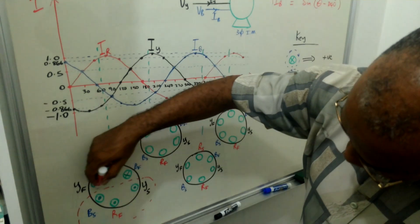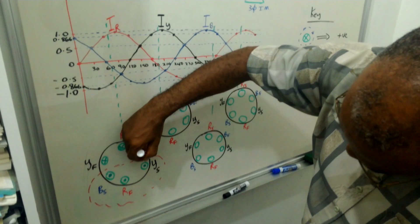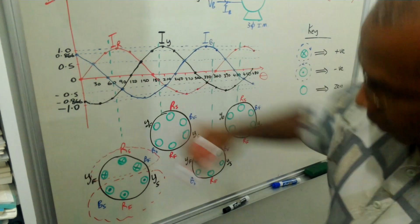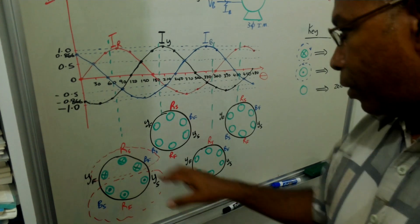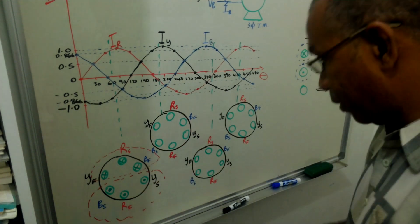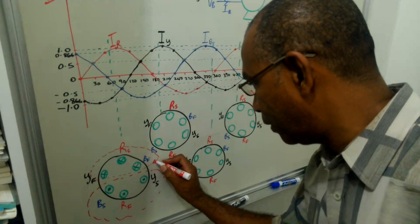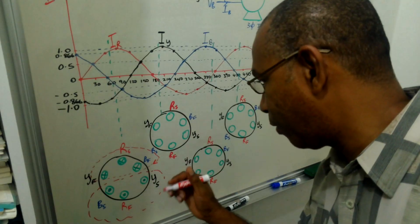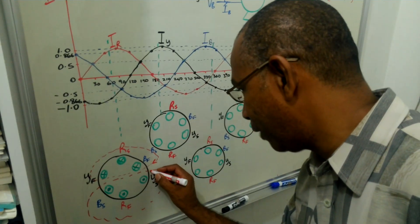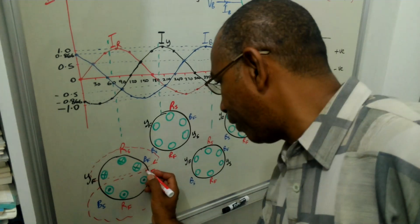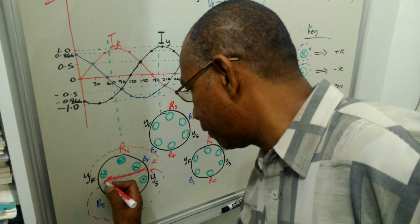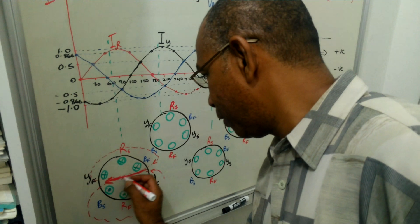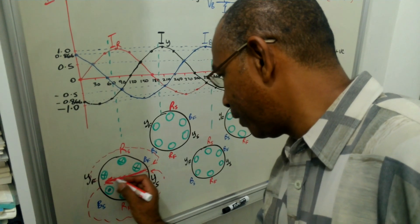Similarly, these are going in the same direction, so we can also combine these. When the current is going away, the direction of the magnetic field is in the clockwise direction. When it's coming at you, it's in the anti-clockwise direction, which means it is going that way. So the net direction of the magnetic field is going west.